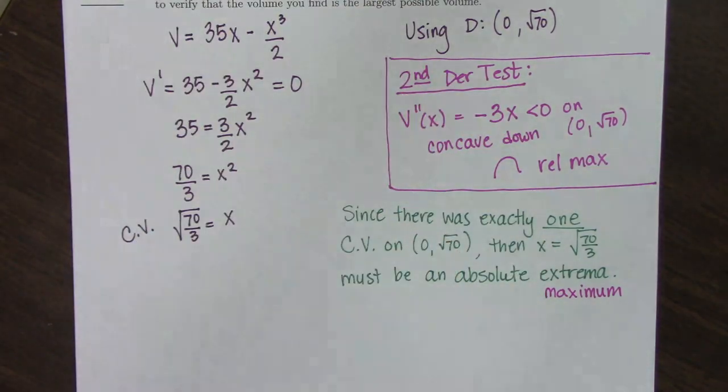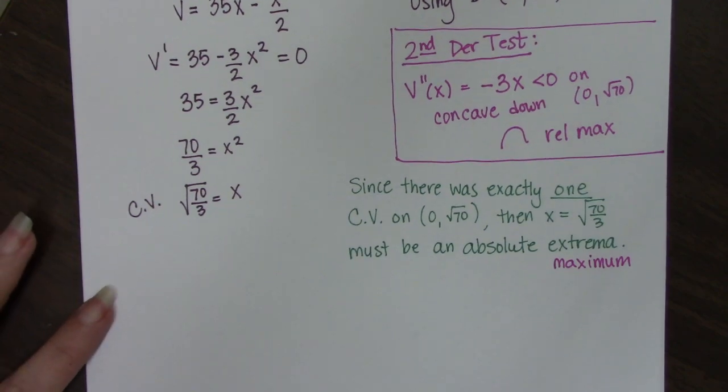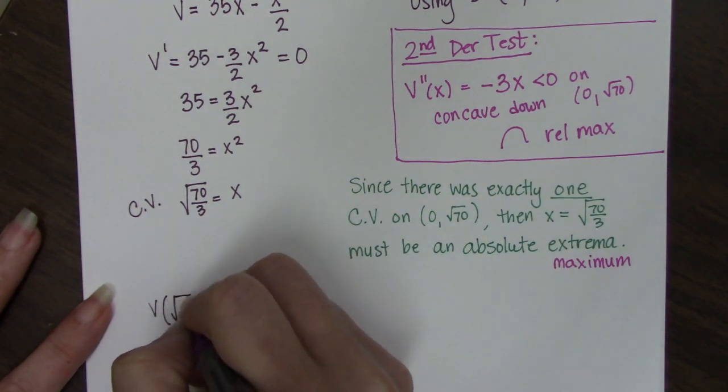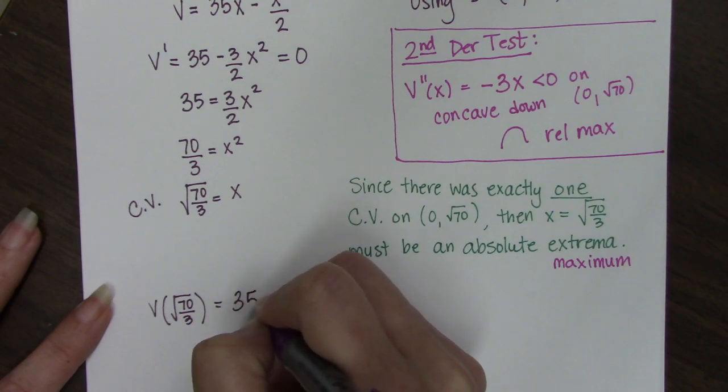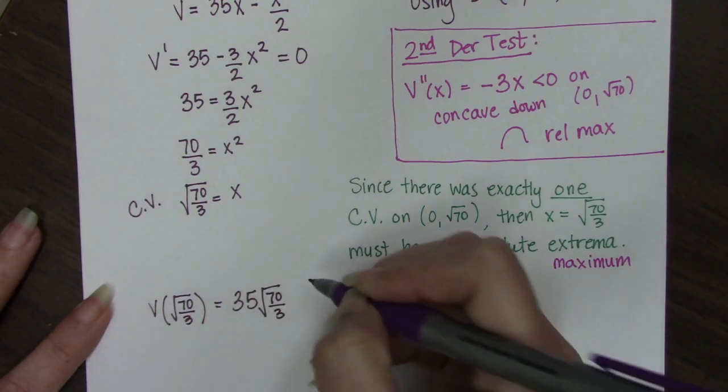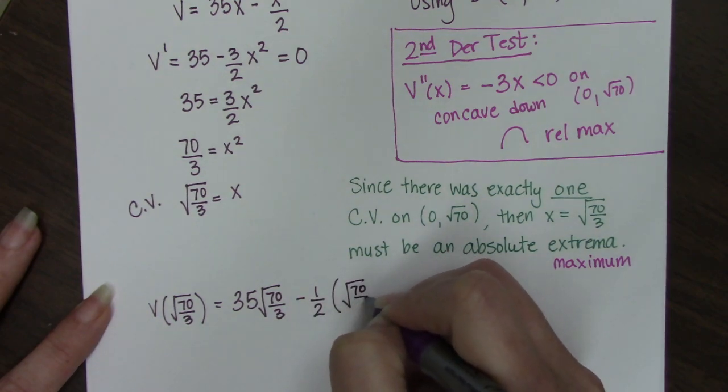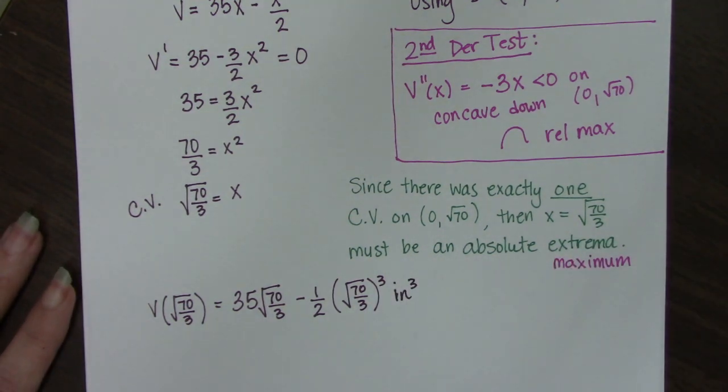Since I did this and I know that my extrema is a relative maximum, I can then conclude that this is an absolute maximum. But you can't say this and claim maximum if you haven't done this. So now that we know we have an absolute maximum, we can now find the maximum volume. The maximum volume is to take our original volume equation and plug our critical value into that. So I get 35 times the square root of 70/3 minus 1/2 times (the square root of 70/3)³ and this is going to be in inches cubed and I'm done.